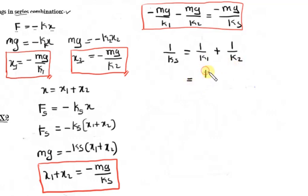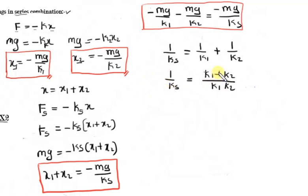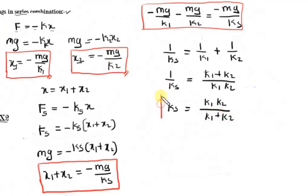Simplifying this equation: (k1 plus k2) divided by (k1 times k2) equals 1 by ks. Rearranging — the denominator becomes the numerator and the numerator becomes the denominator — we get ks equals k1 times k2 divided by k1 plus k2. This is the final equation for the equivalent spring constant in series combination.